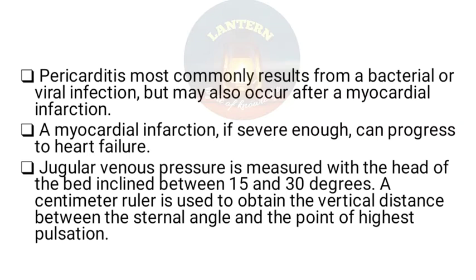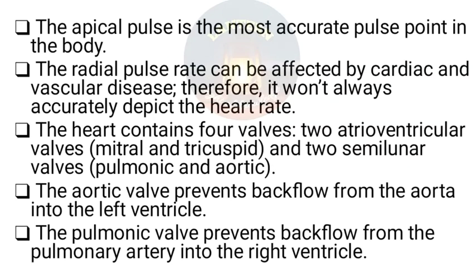Jugular venous pressure (JVP) is measured with the head of the bed inclined between 15 and 30 degrees. A centimeter ruler is used to obtain the vertical distance between the sternal angle and the point of highest pulsation. The apical pulse is the most accurate pulse point in the body; radial pulse can be affected by cardiac and vascular diseases.